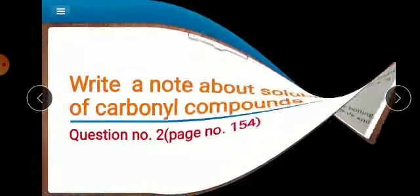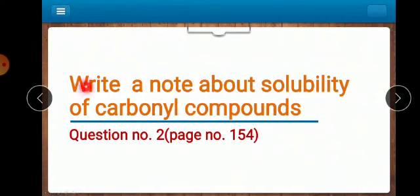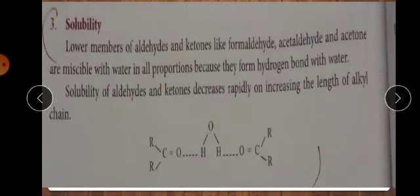Next question. Write a note about solubility of carbonyl compounds. It is already in your page number 154 in your book. See here solubility. Lower members of aldehydes and ketones like formaldehyde, acetaldehyde and acetone are miscible with water in all proportions because they form hydrogen bond with water. Solubility of aldehydes and ketones decreases rapidly on increasing the length of alkyl chain. This is the answer for that question.